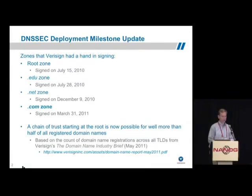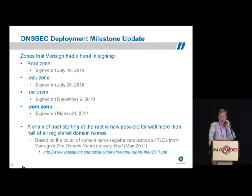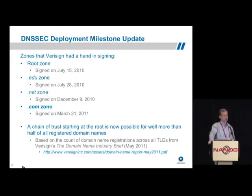I'm going to talk primarily about the zones that VeriSign had a hand in signing. Here's the timetable: we've had some really significant deployments in the past year or so, starting with the root being signed last summer, closely followed by .edu. We signed .net at the very end of last year, and then the big one was .com on the last day of March this year. Now that .com is signed, if you look at the entire domain name market worldwide — VeriSign has a quarterly publication called the Domain Name Industry Brief which sizes the entire market at 200 million names, with about 100 million of those in .com and .net. So with .com, .net, and all the other TLDs that are signed, well over half of all domains worldwide can be reached with a chain of trust starting at the root. That's a much different place than we were just a couple of years ago.